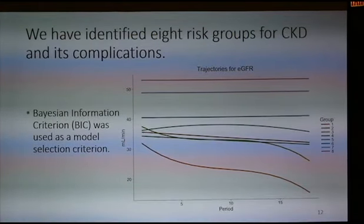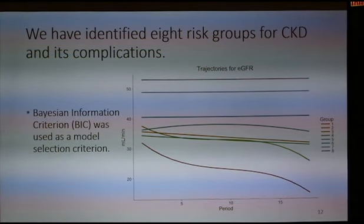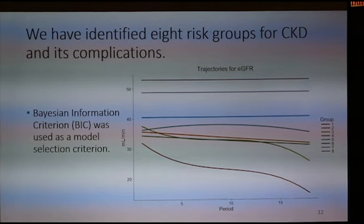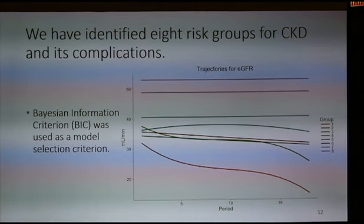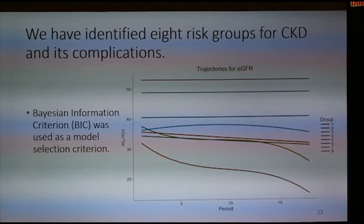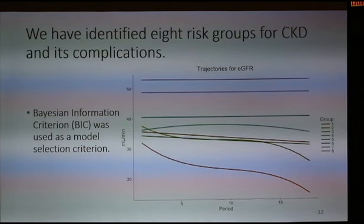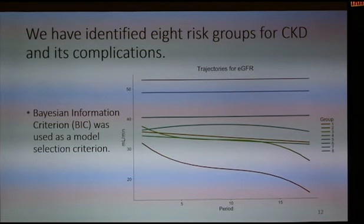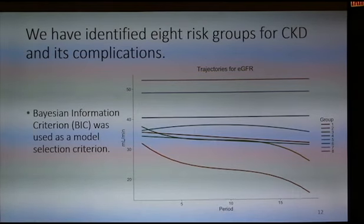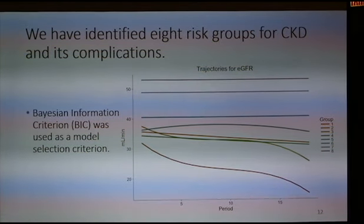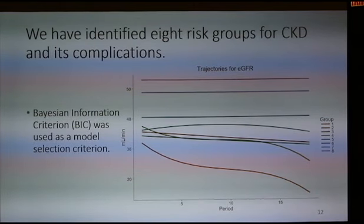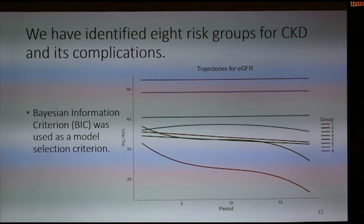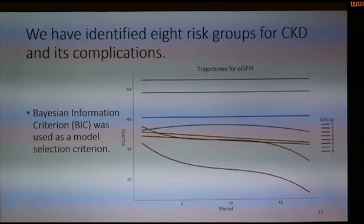Let me show some results from running this method. We identified eight risk groups for CKD and its complications using the Bayesian Information Criterion for model selection. On this plot you can see the CKD progression over time for all different groups. The first three groups stay pretty much constant — only a constant polynomial term — whereas for the lower groups we clearly see a deterioration as time progresses. But remember, this presents only one piece of the puzzle, since we have four other biomarkers we also want to examine.